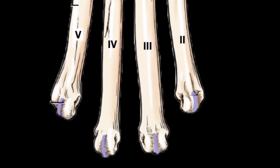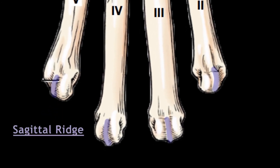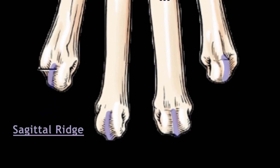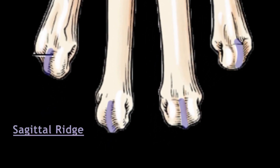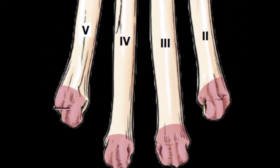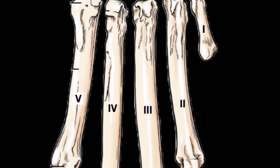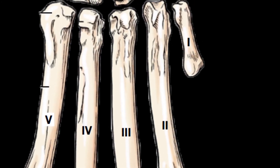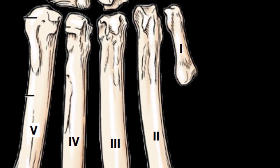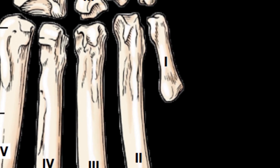All bones bear a sagittal ridge except the first metacarpal bone. This sagittal ridge is present on the palmar side and helps articulate with the corresponding phalanx. Between the base and the head, the body is present. The first metacarpal bone is atypical — it is a vestigial structure in the dog.